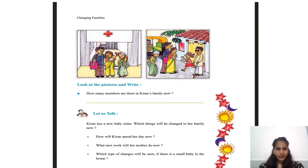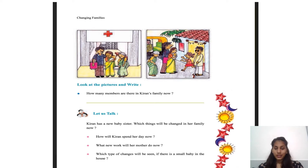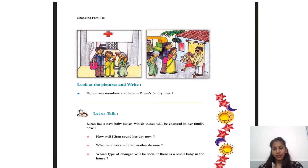Look at the pictures and write: how many members are there in Kiran's family? Previously there were five members, but now there is a newborn baby. So after the baby comes, how many members are there? You have to count and write how many members are in Kiran's family now.